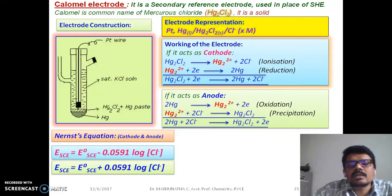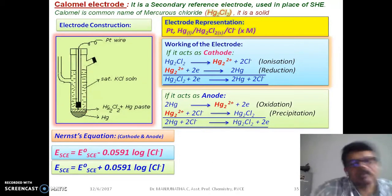Let us look at the Nernst equation for this. E is equal to, that is, actually calomel electrode is equal to, instead of minus we get plus here. Generally, if it behaves as cathode, we have the minus here, minus 0.0591 log of concentration of Cl-. If it behaves as anode, we have the Nernst equation, that is E is equal to E0 plus 0.0591 log of Cl-.